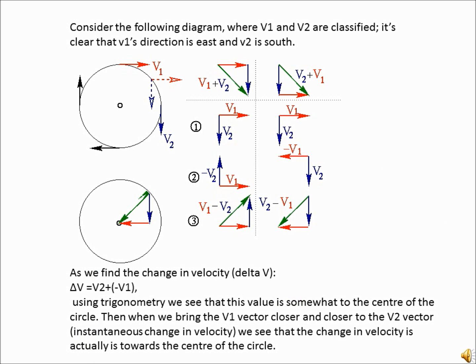To understand all this, we can turn to the diagram below, which shows an object undergoing uniform circular motion. Here, we can see that even though the velocity is same throughout, the direction is continuously changing. For example, when we look at vector 1 or V1, it's pointing east, and when we look at vector 2, it's pointing south.